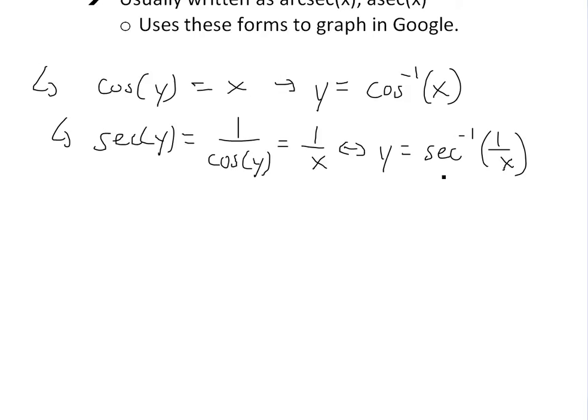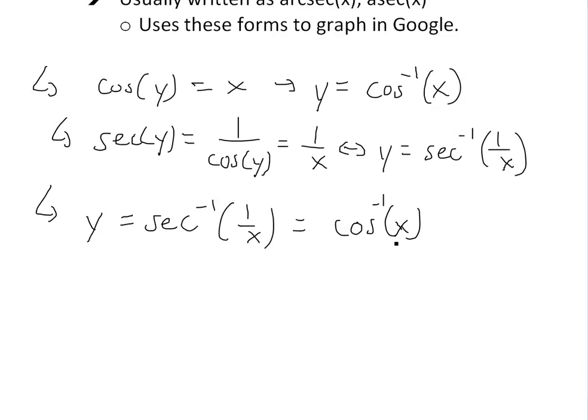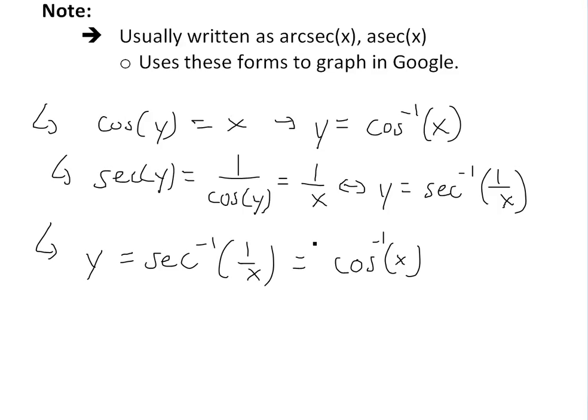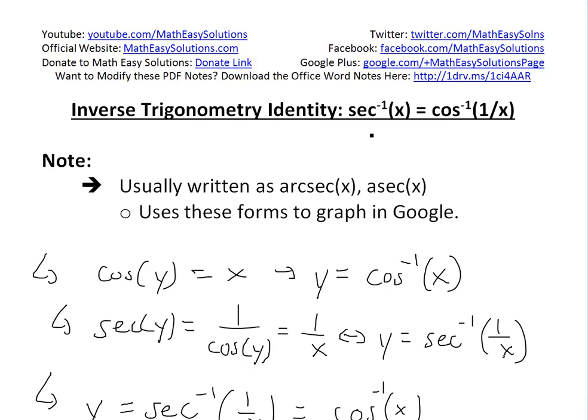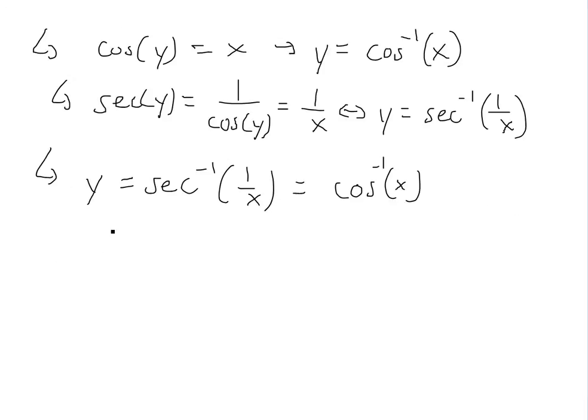So now we have two functions for y. So we know y is equal to inverse secant of 1 over x, and this equals to inverse cosine of x. So this means the exact same thing as our identity over here. It just has the x and 1 over x switched around, but this means the same thing, and you can see it by changing a variable around.